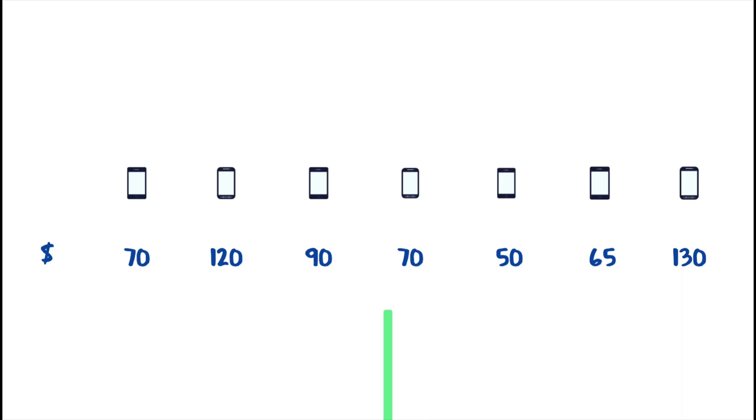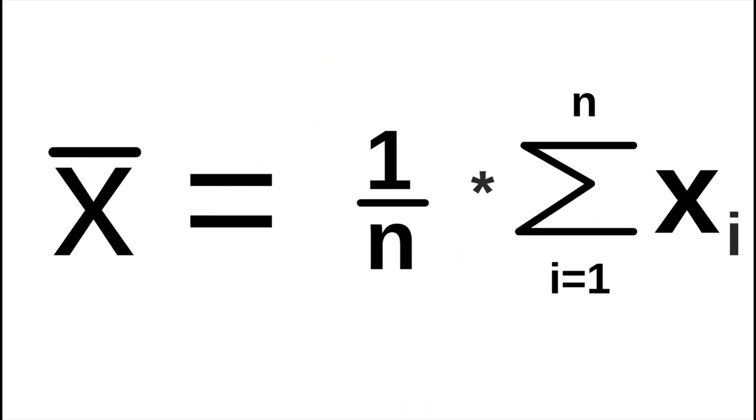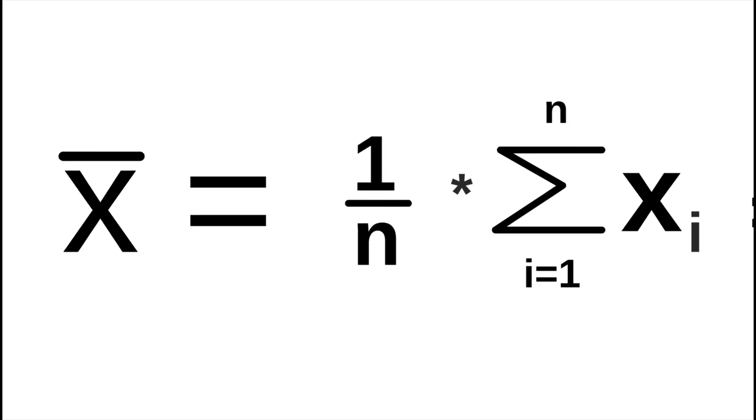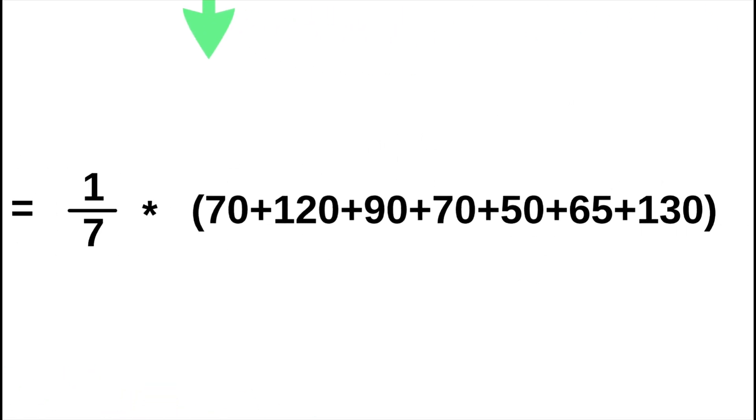As mentioned, we first need to calculate the mean or arithmetic mean to then compare the other prices with this value. The formula for calculating the mean is 1 divided by n times the sum of x_i, which is the individual prices of the offered smartphones.